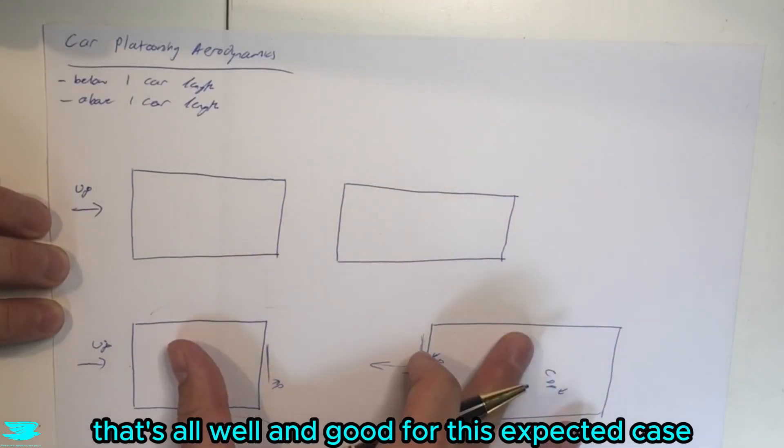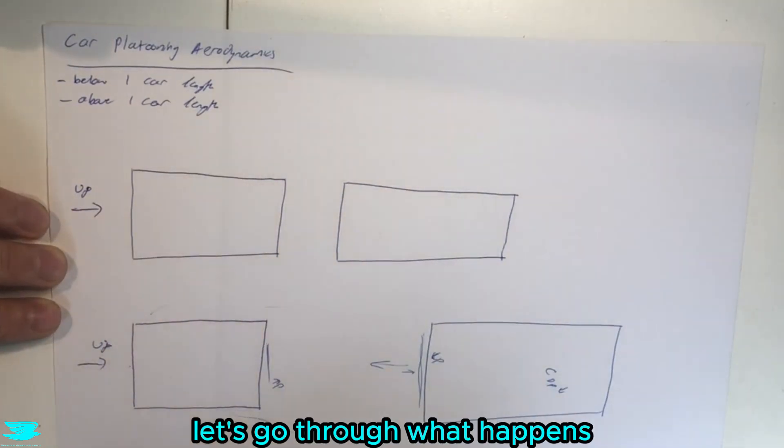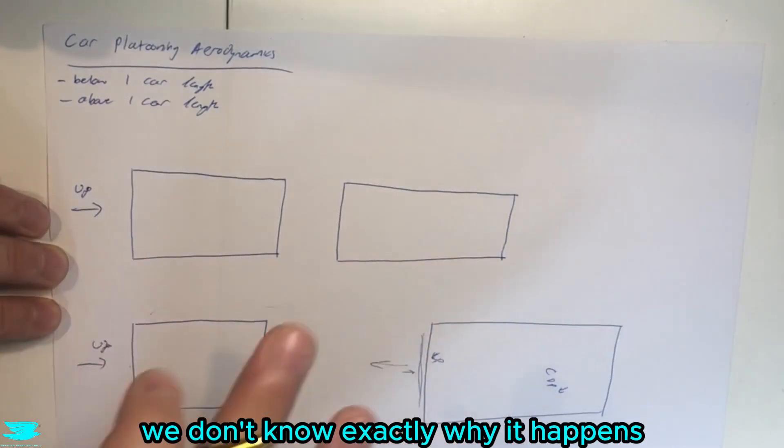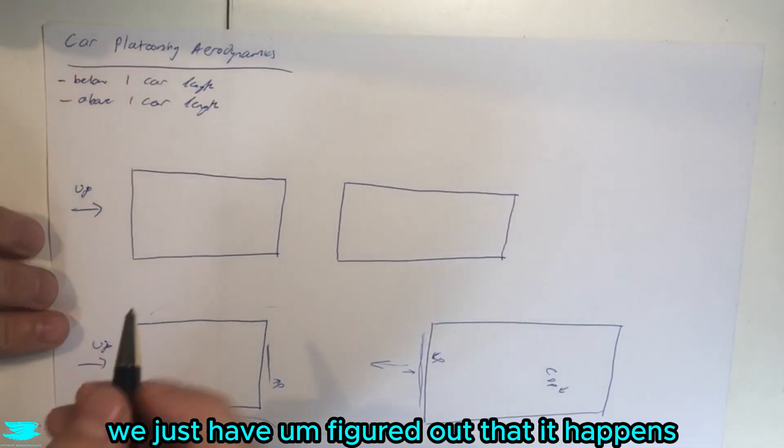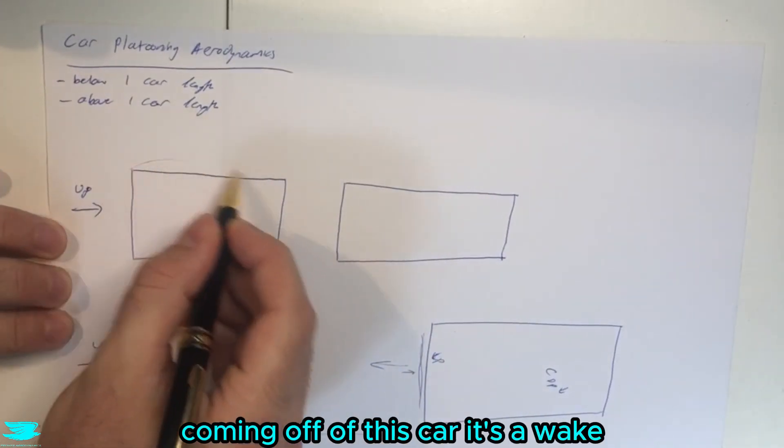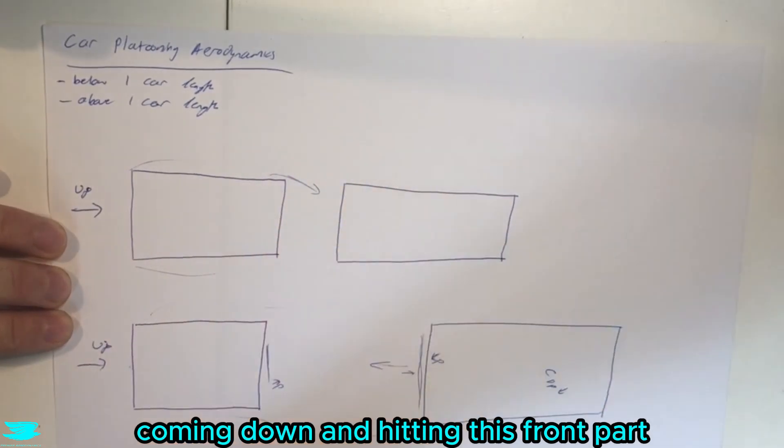That's all well and good for this expected case. This unexpected case, let's go through what happens here. And heads up, we don't know exactly why it happens, we just have figured out that it happens. So again, we get the flow coming off of this car, it's awake, and generally speaking, there'll be some flow coming down and hitting this front car.